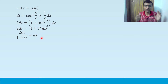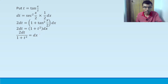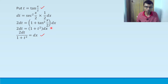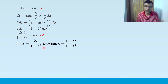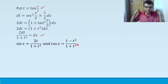In case these steps feel tedious, in the exam you can write 't = tan(x/2)' and then directly write 'dx = 2dt/(1 + t²)' — no marks would be deducted. The textbook also gives it like this. Likewise, sin x = 2t/(1 + t²) and cos x = (1 − t²)/(1 + t²) — just memorize these standard half-angle substitution formulas.